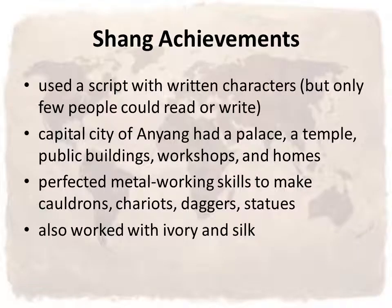Some other notable achievements of the Shang Dynasty: they used a script with written characters. Only a few people could read or write, but they were the first in China to develop a writing system. Their capital city of Anyang had a palace, a temple, public buildings, workshops, and homes — very organized. The Shang also perfected metalworking skills to make cauldrons, chariots, daggers, and statues. And they worked with ivory and silk to create some very beautiful pieces of art.